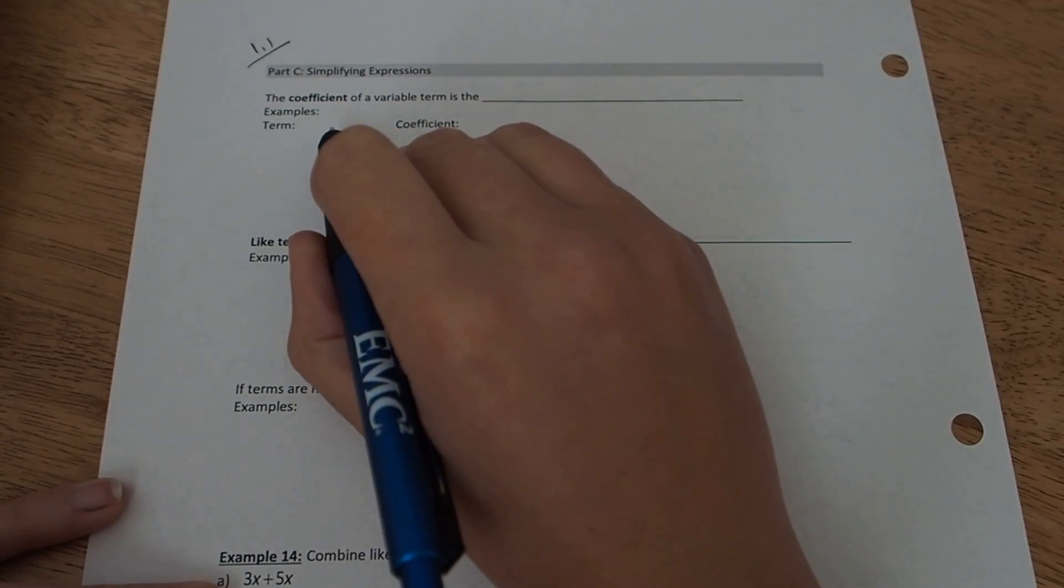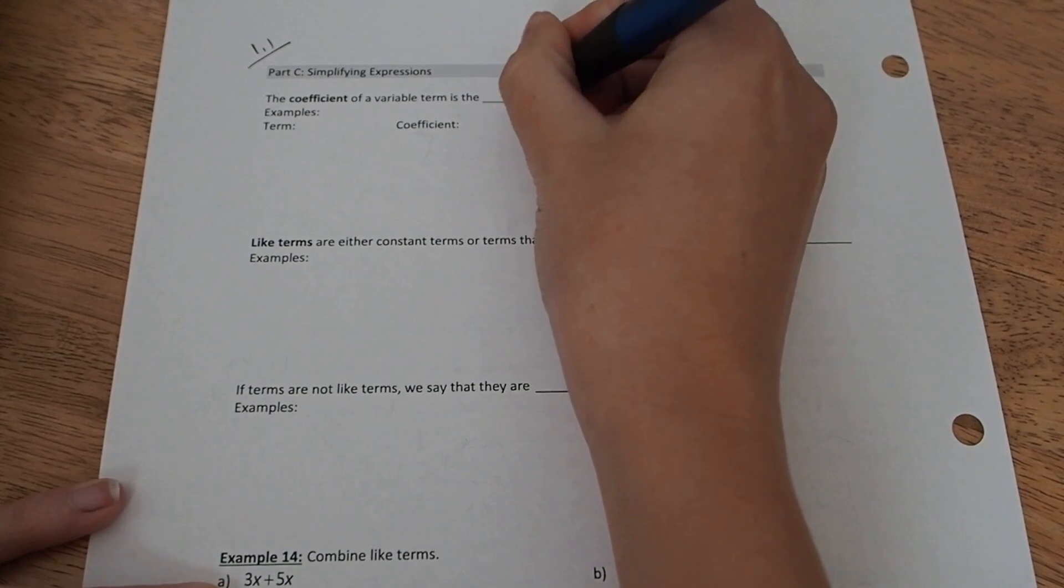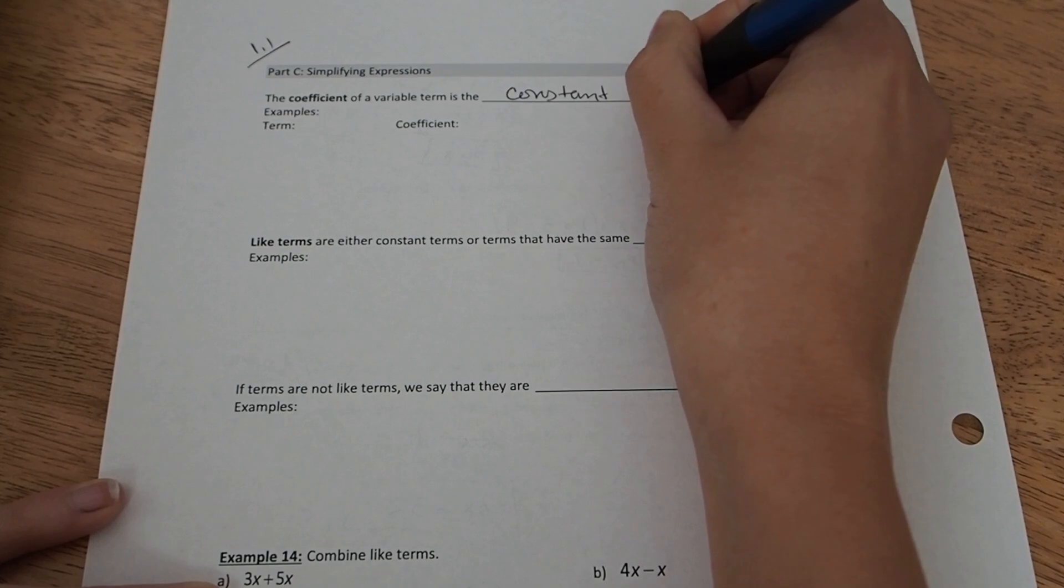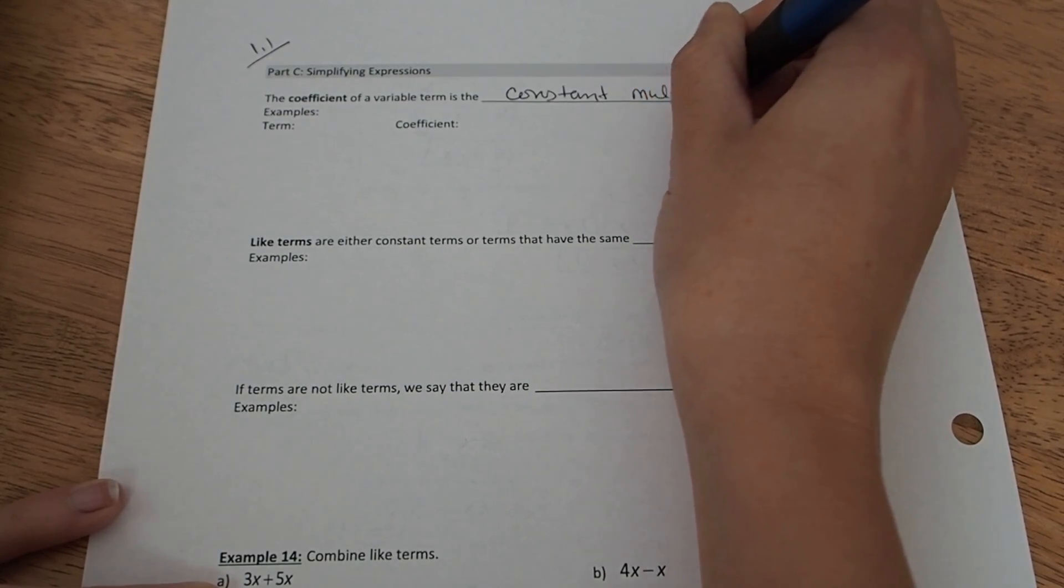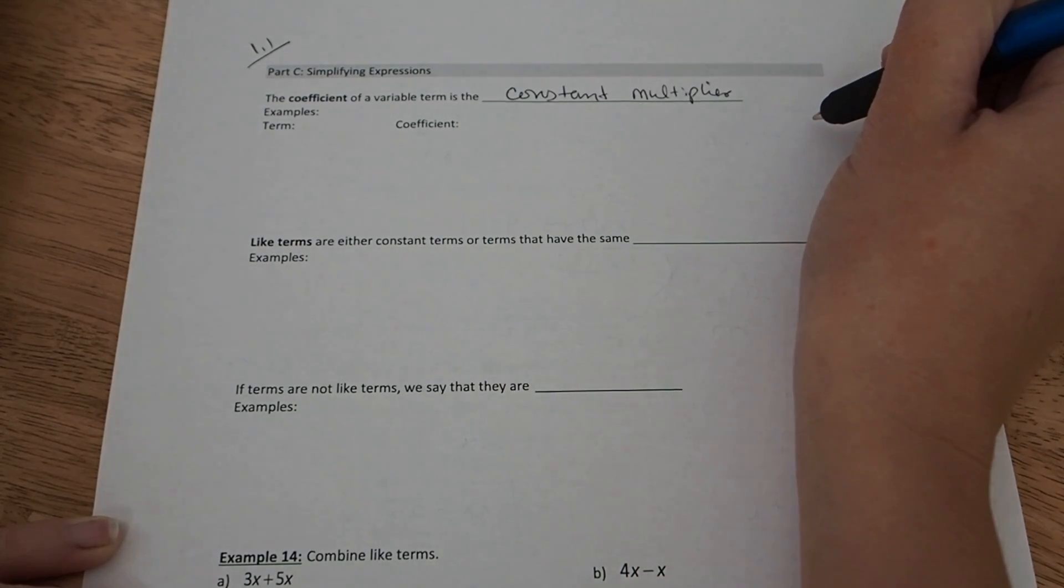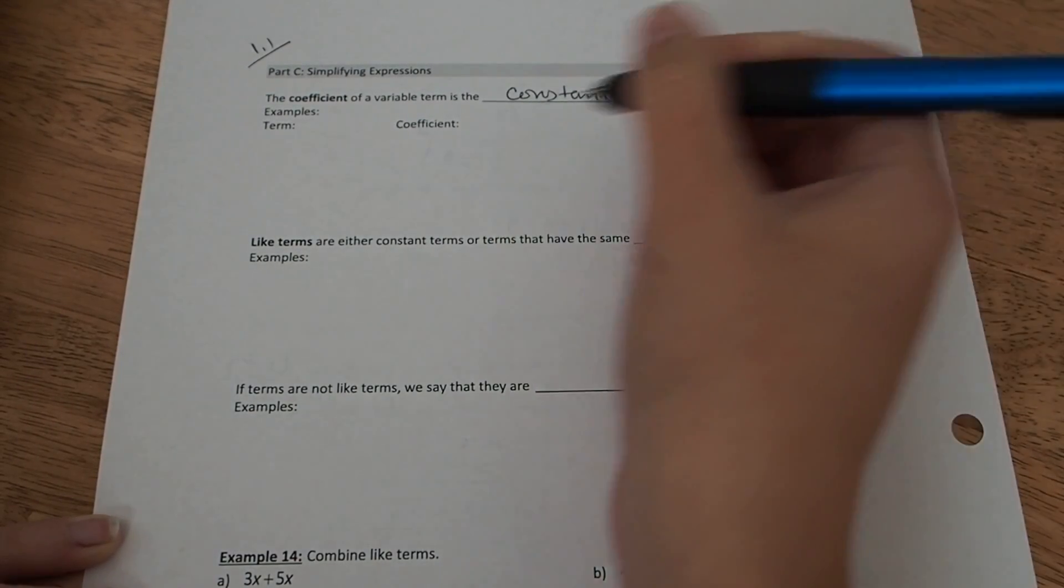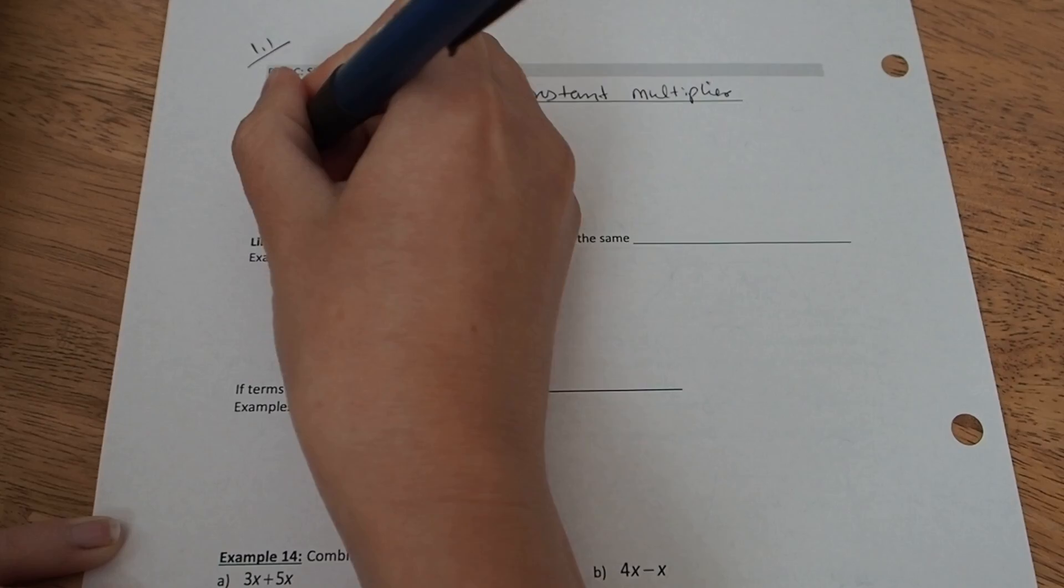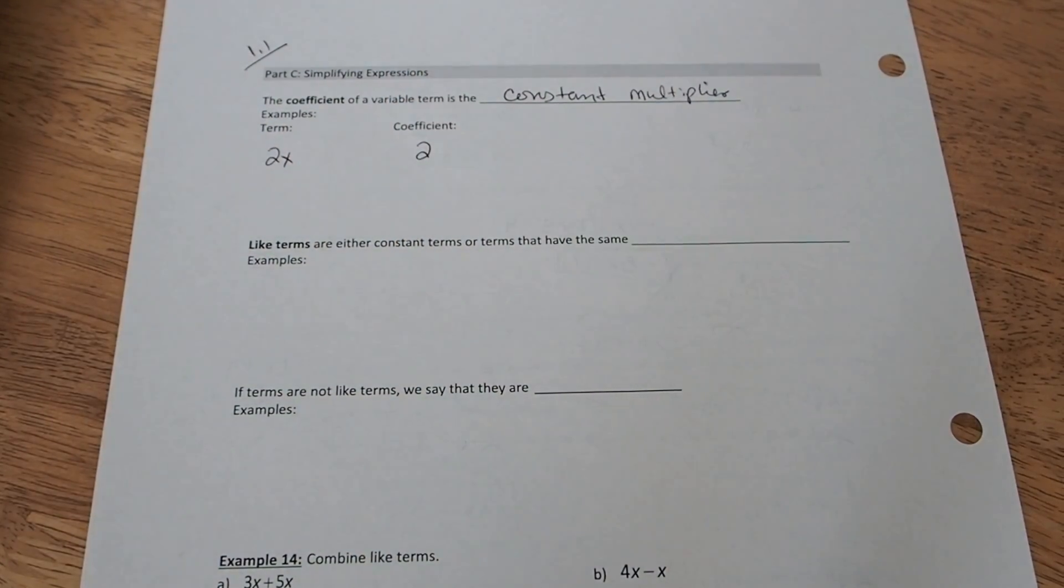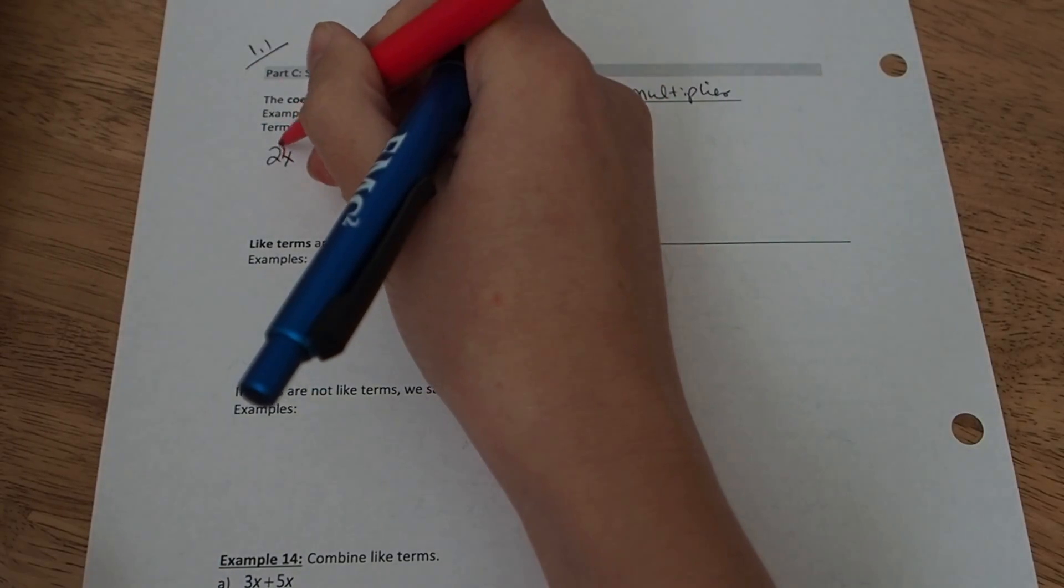The coefficient of a variable term is the constant multiplier. If you watched the previous video, you would have noticed we mentioned the word coefficient earlier. If I have a term such as 2x, the coefficient is 2. It is the constant that's being multiplied by the variable.